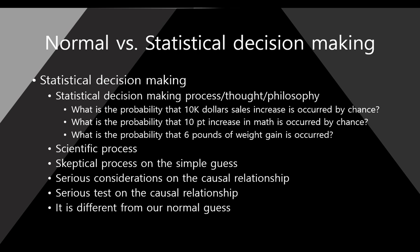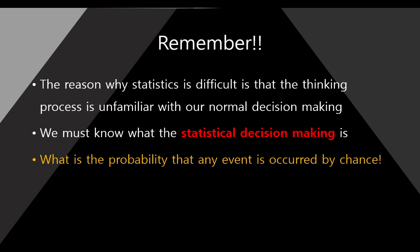In reality, nobody thinks like this. However, this is the reason why statistics is difficult for us. Normal people usually cannot think this way. Remember: the reason why statistics is difficult is that the thinking process is unfamiliar to our normal decision making. Statistical decision making is totally different from our normal decision making in life. So we must understand what statistical decision making is — this is very important when we start our statistics course.